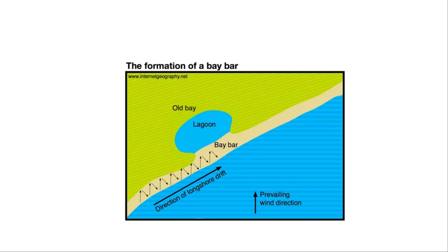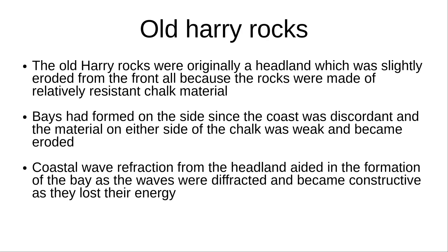An example of a section of coastline in the UK with major landforms of erosion and deposition is the Old Harry Rocks previously mentioned. The Old Harry Rocks were originally a headland, which was slightly eroded from the front, because the rocks were made of a relatively resistant chalk material. Bays had formed on the side since the coast was discordant and the material on either side of the chalk was weak and became eroded. Coastal wave refraction from the headland aided in the formation of the bay, as the waves were diffracted and became constructive as they lost their energy.